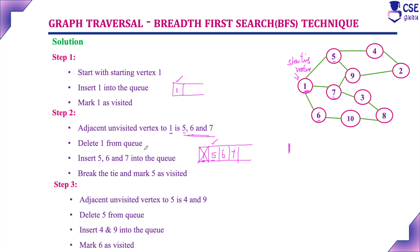Currently, the visited vertex is 5. The adjacent unvisited vertices to 5 are 4 and 9. Insert 4 and 9 into the queue. Since we have visited vertex 5 and considered all its adjacent unvisited vertices, delete 5 from the queue. The first vertex remaining in the queue is 6 — mark it as visited. The traversal output so far is 1, then 5.